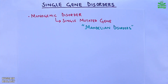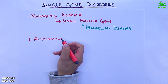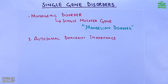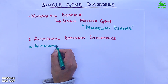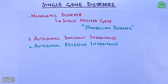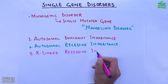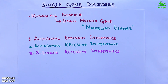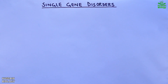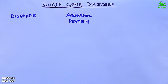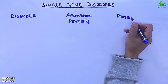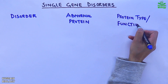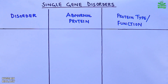Let's classify these disorders on the basis of inheritance. First, we have autosomal dominant inheritance disorders; second, autosomal recessive inheritance disorders; and third, X-linked recessive disorders. For each disorder, we'll list the disorder on the left, the abnormal protein associated with it in the middle, and the normal function of that protein on the right.